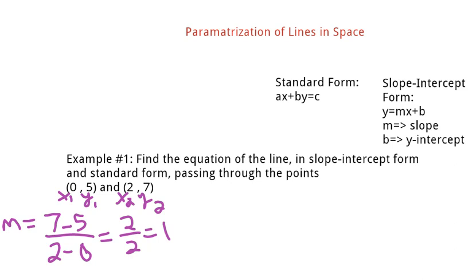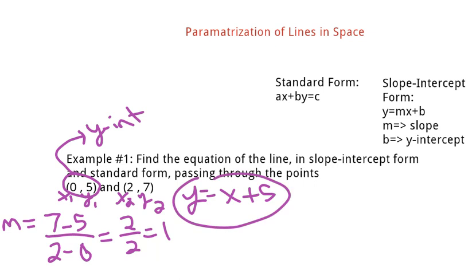In this case we just get 1, and then actually this is my y-intercept. So my equation says y equals 1x, or just x, plus b, which is 5 in this case. So there's my slope-intercept form.